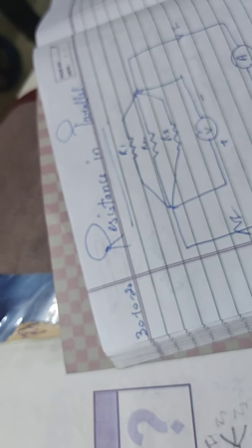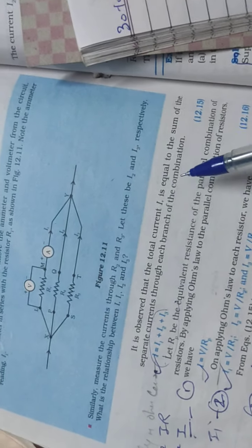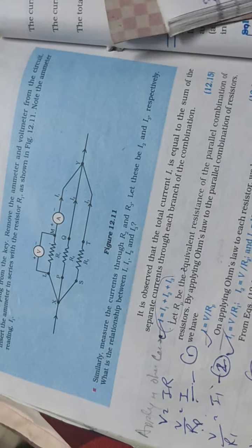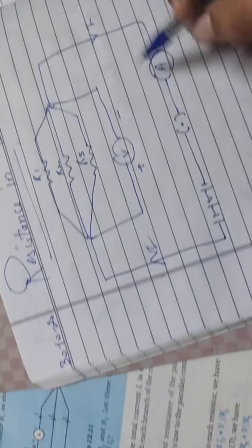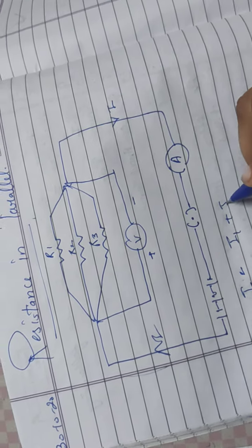It is observed that the total current I total is equal to the sum of the separate currents through each branch of the combination.